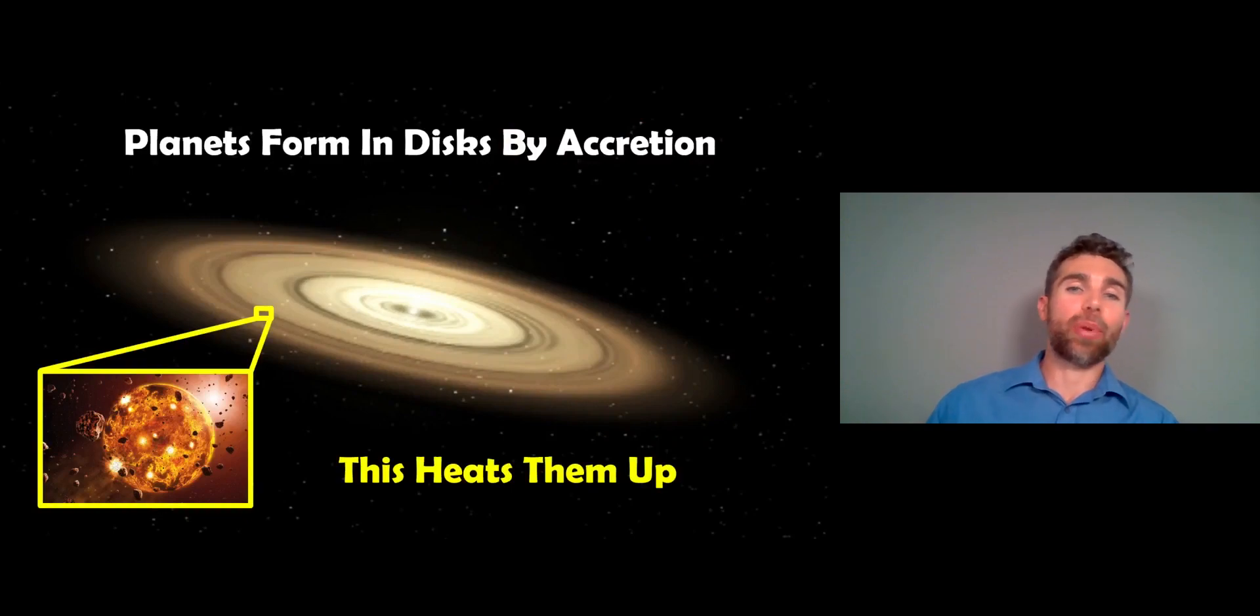If we go back to how planets form, they typically form in a disk around a star. That's not always the case, but generally most planets are probably going to form in this sort of environment. As the star is forming in the center, you then have this protoplanetary disk or circumstellar disk, and you get accretion in that. So the disk starts to clump together, those clumps grow, things hit each other. We call it accretion, but this causes them to heat up as well.